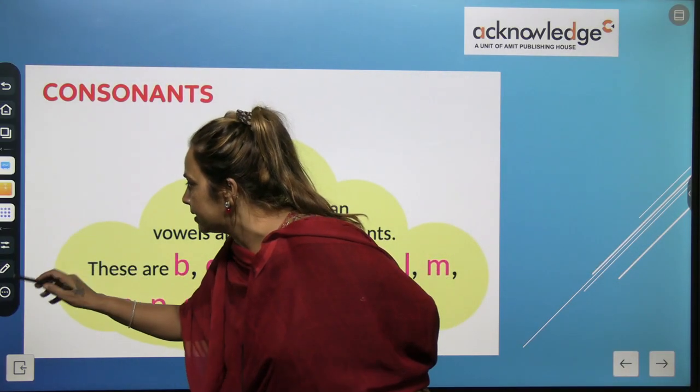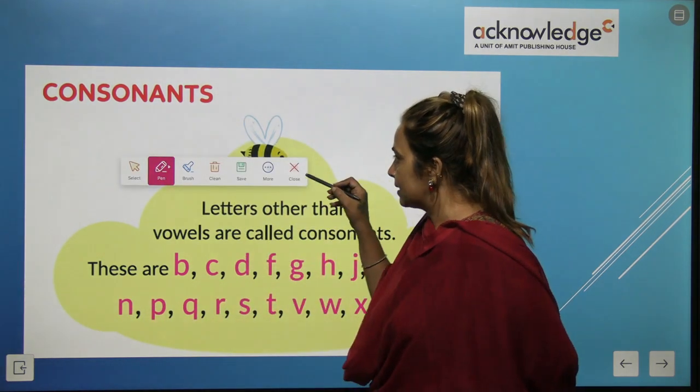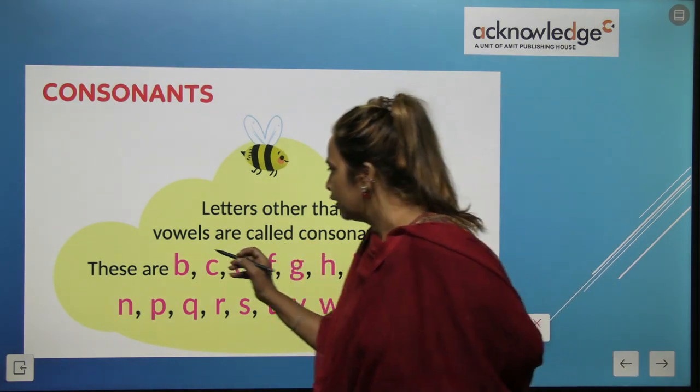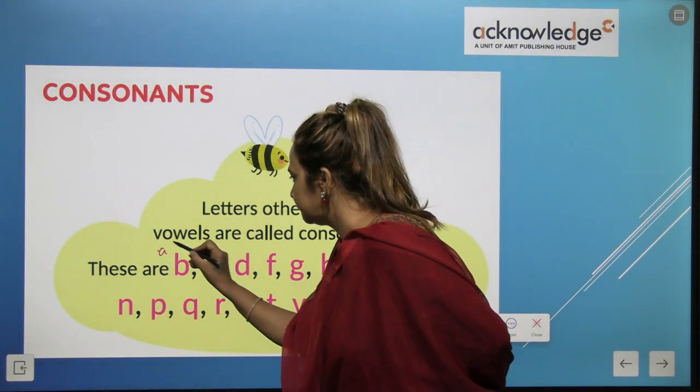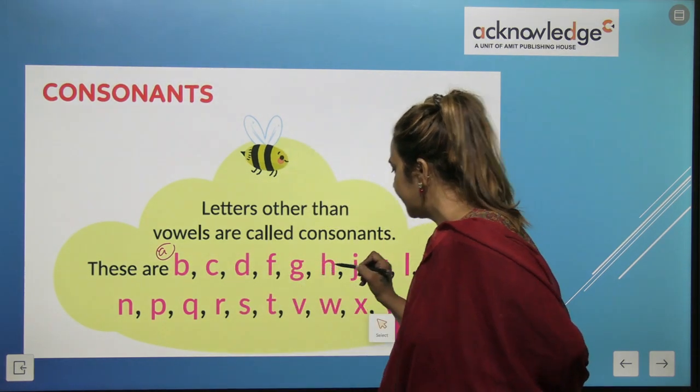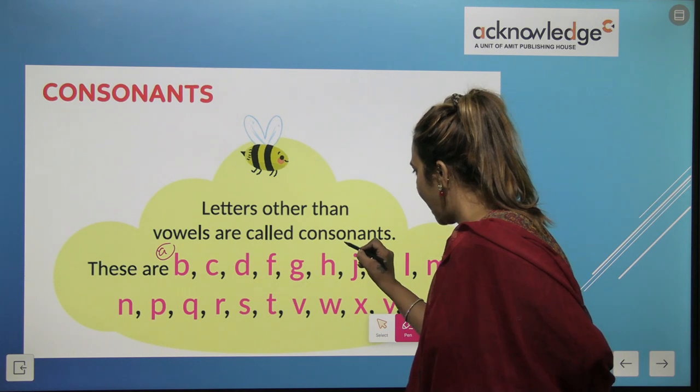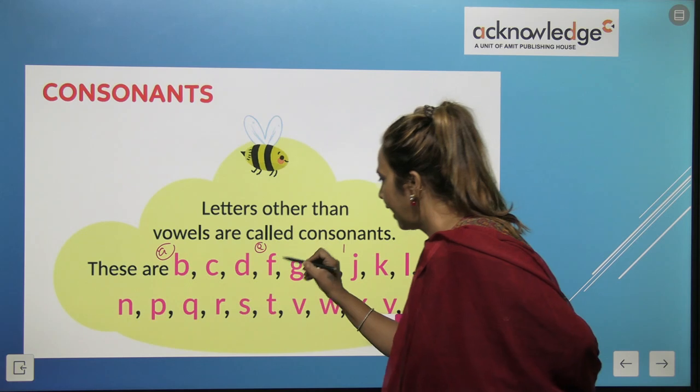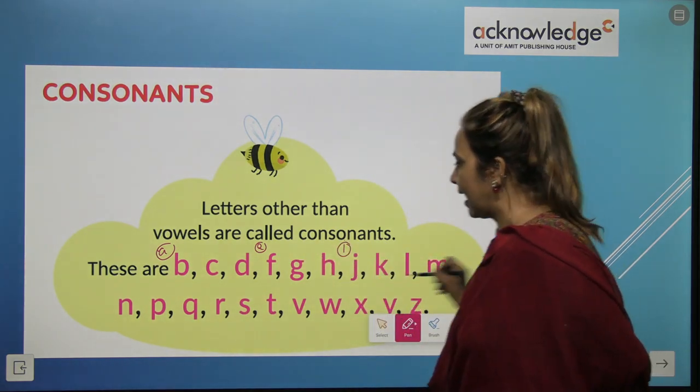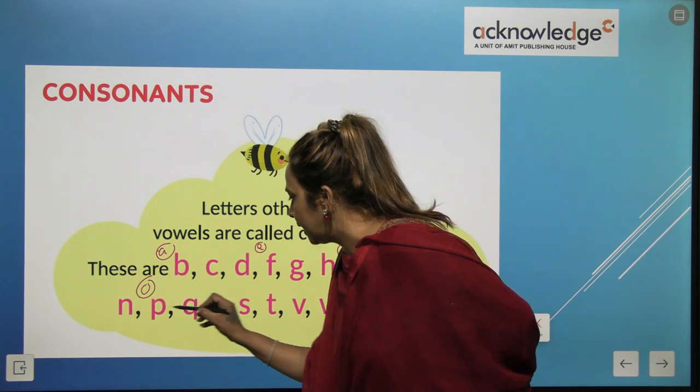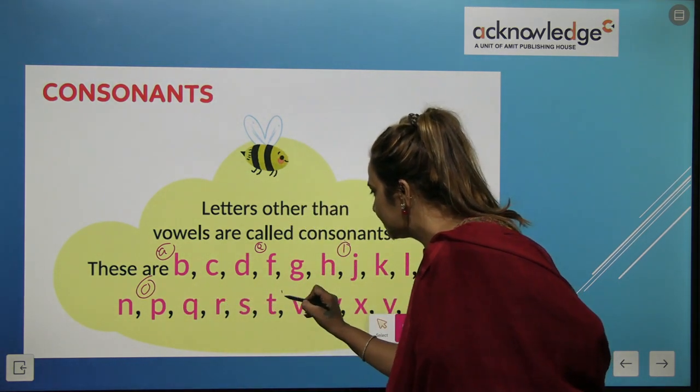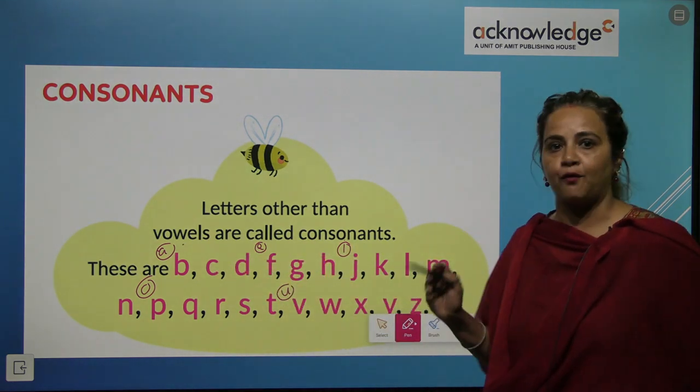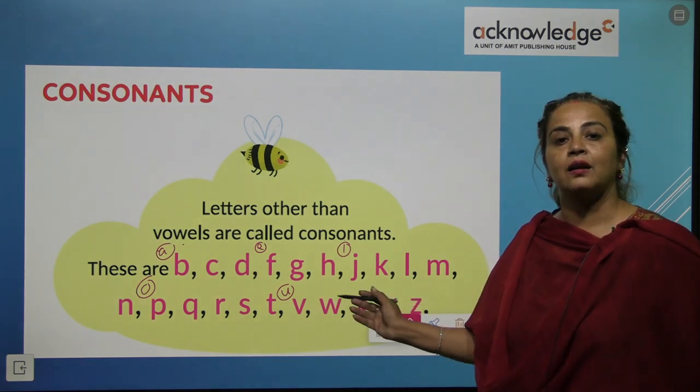Children, look. In this worksheet, in this chapter, what are missing? Yes, vowels are missing. So A is a vowel, right? A, B, C, D, E is missing. F, G, H, I is missing. J, K, L, M, N, O is missing. P, Q, R, S, T, U is missing. So these five are vowels and the rest are consonants.